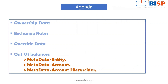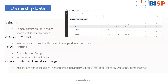Our agenda will cover the problems we have while defining ownership data when our figures are not coming as expected, then exchange rates, override data issues, and lastly out-of-balances. Under this we also have metadata: entity metadata, account metadata, and account hierarchies.